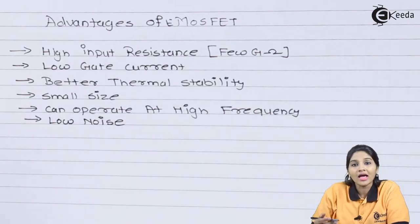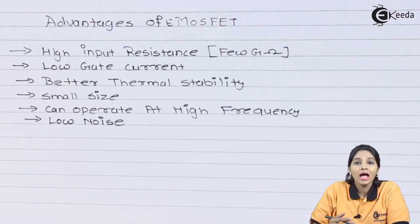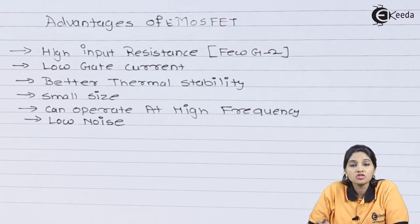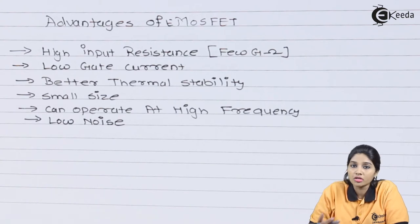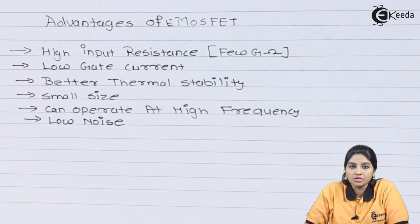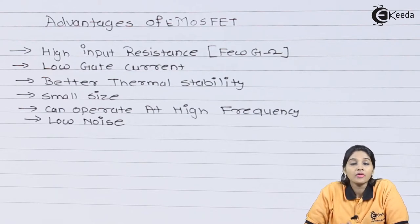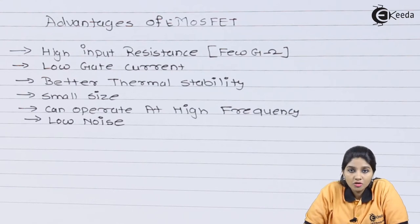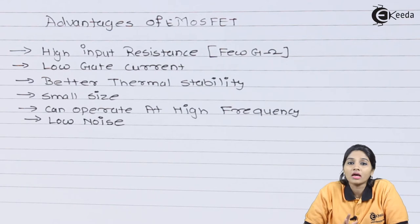Low gate current — as the input resistance is high, it causes less amount of current to flow through the gate terminal. As it is a classification of FET, it provides better thermal stability. Another advantage of E-MOSFET is that it has a very small size and therefore it is very easy to fabricate. It can also operate at very high frequency and produces less internal noise when operating at high frequency.